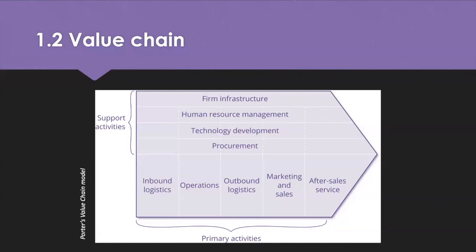Both the value chain and the supply chain aim to work together to create value for the organization and provide a product to the customer. In both chains, demand is generated from the customer and financial flows are transferred from customers to suppliers. A network can hold and maximize value, but it is difficult to achieve a maximum level of margin in the supply chain.